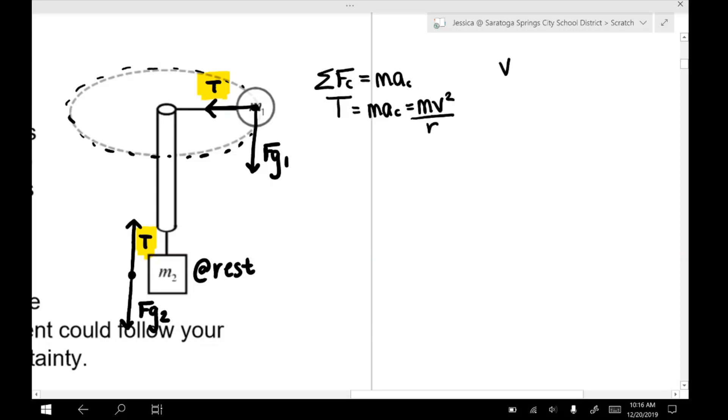So we can write that as that. And just an aside, this is moving at a constant velocity. So if we needed to, we could substitute in V as 2πR over T, where T is the period, R is the radius.